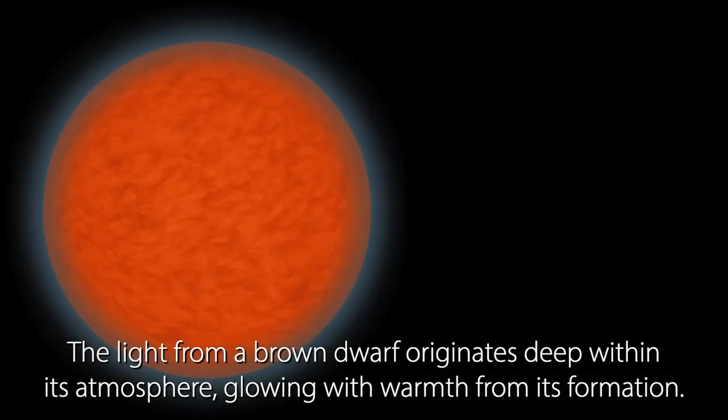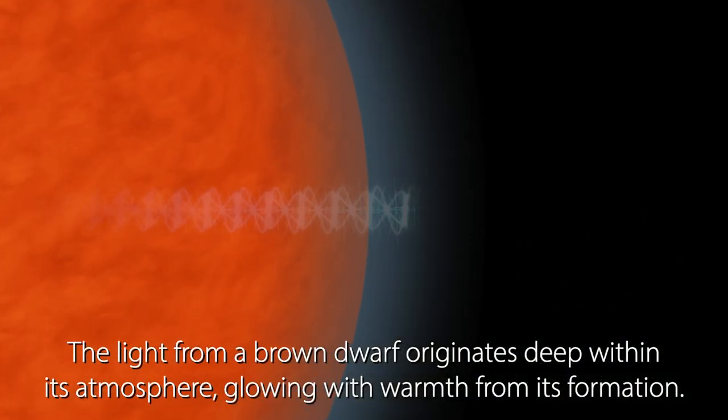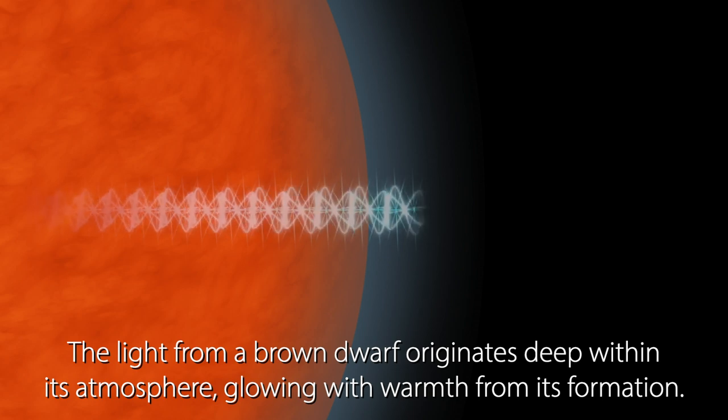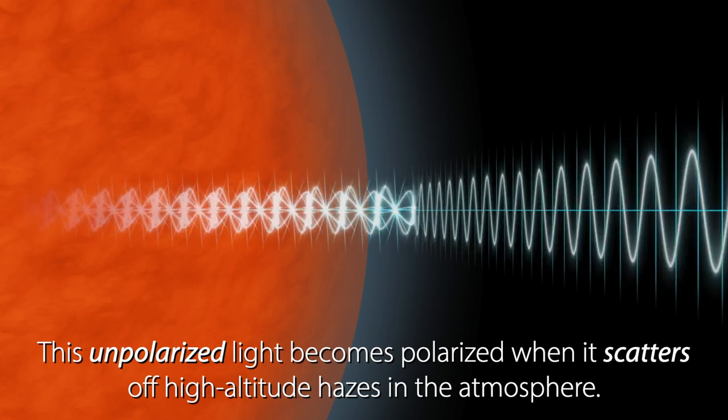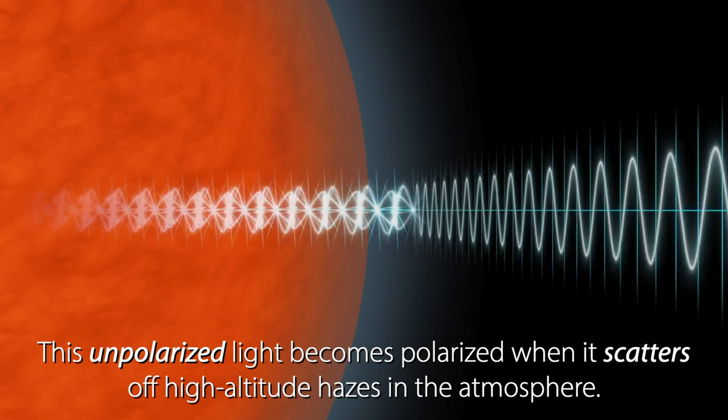The light from a brown dwarf originates deep within its atmosphere, glowing with warmth from its formation. This unpolarized light becomes polarized when it scatters off high altitude hazes in the atmosphere.